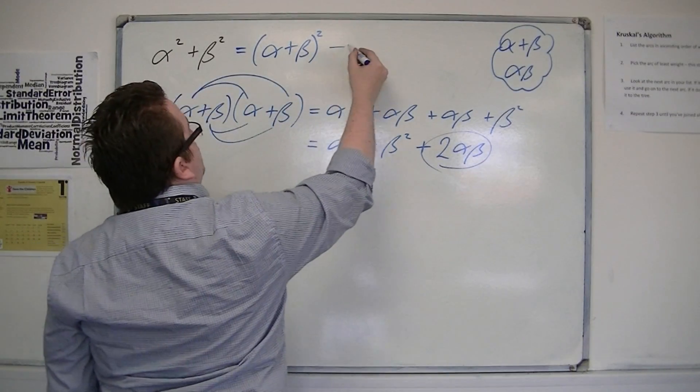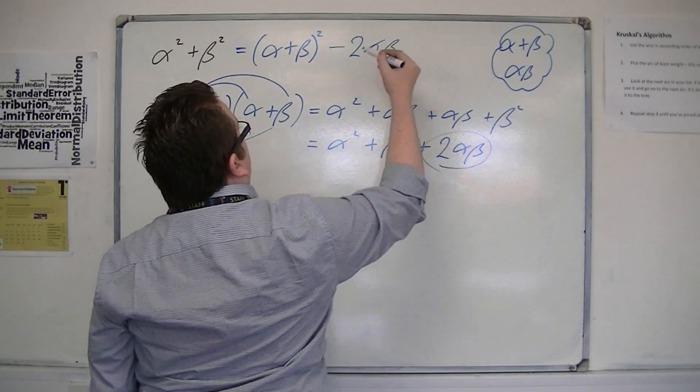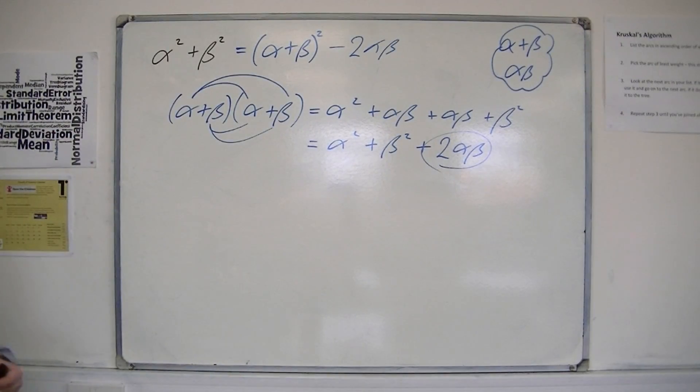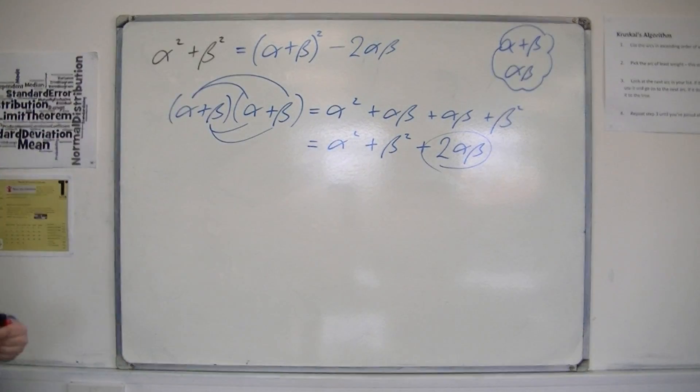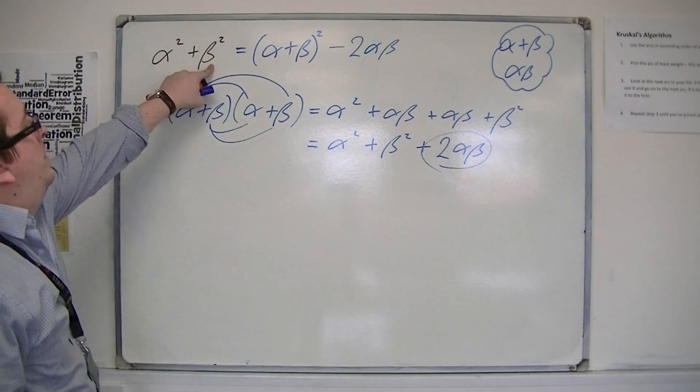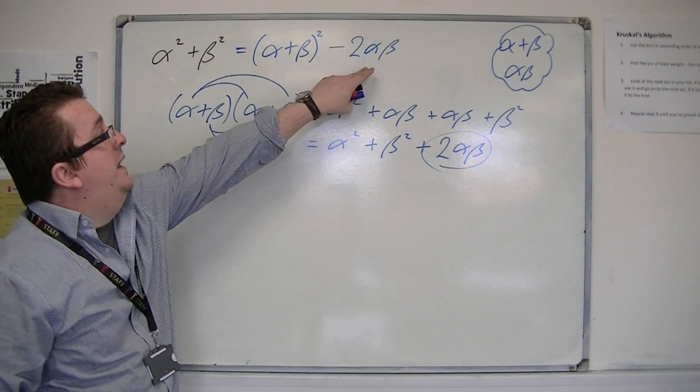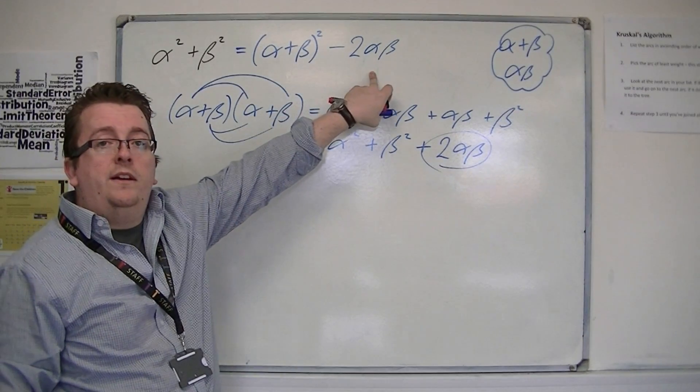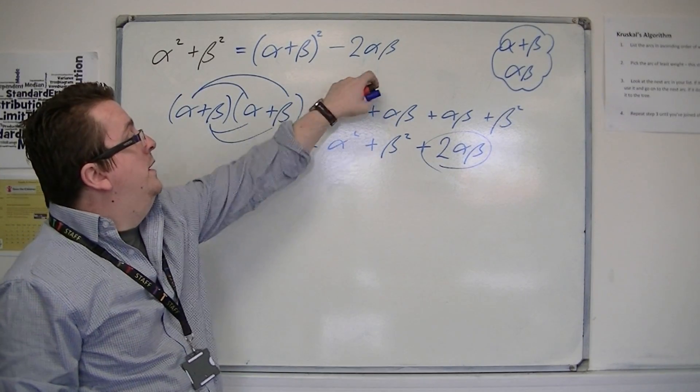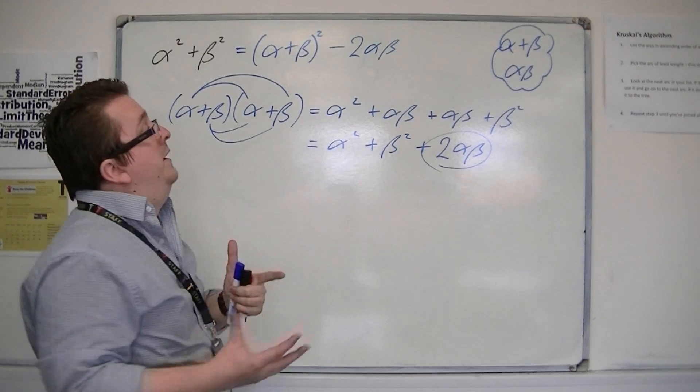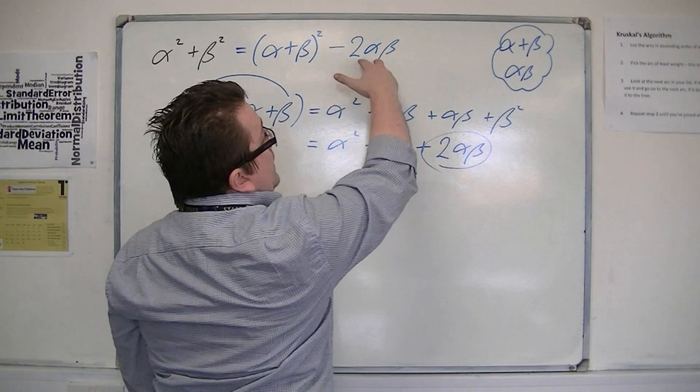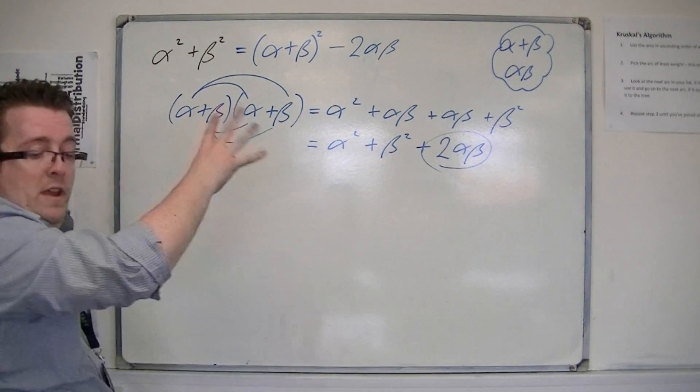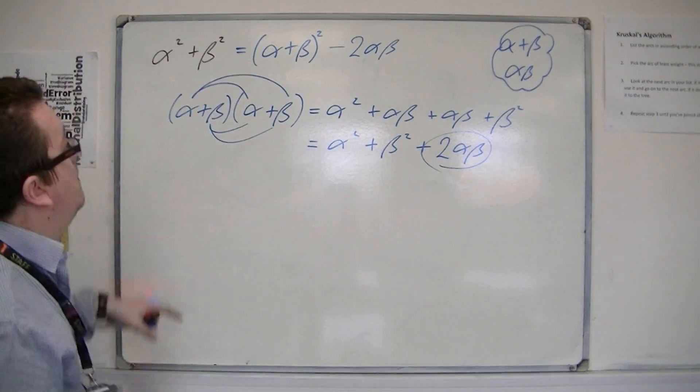I don't want that 2 alpha beta, so I subtract it from that side. So, alpha squared plus beta squared is the same as alpha plus beta all squared, take away 2 alpha beta, which is exactly what I wanted. I've got it into the format of alpha plus betas and alpha betas. That's really useful if you can memorize that.